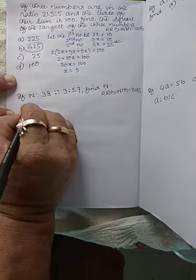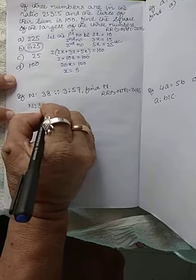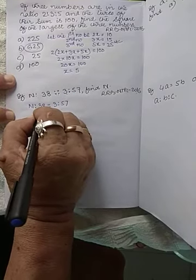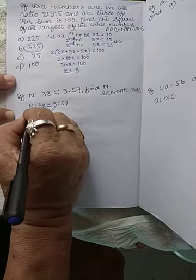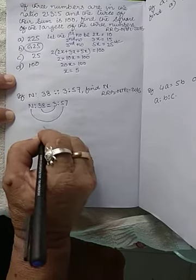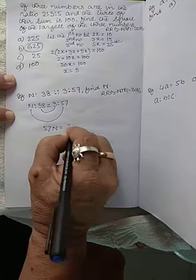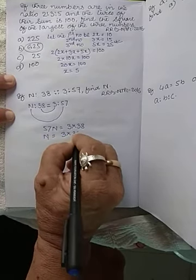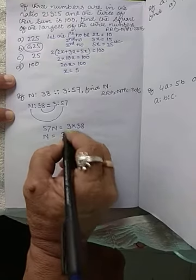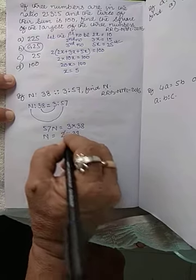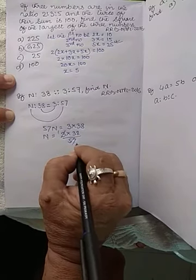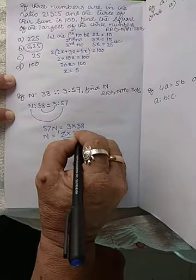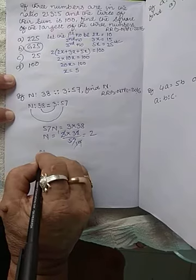So let us solve. N:38 = 3:57. For this type of question, the product of the interiors will be equal to the product of the exteriors. That means 57N = 3 × 38. Simplifying, 57N = 114, so N = 2.